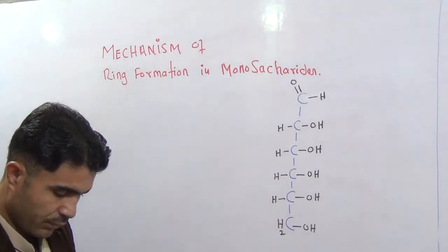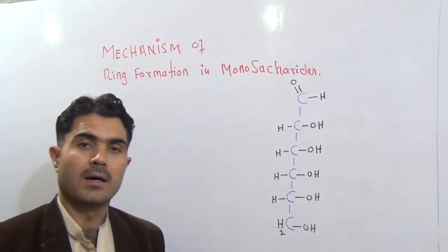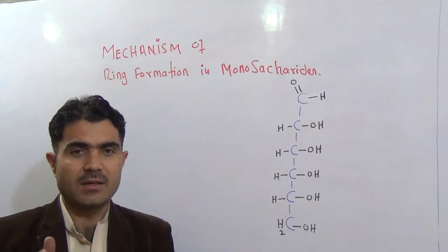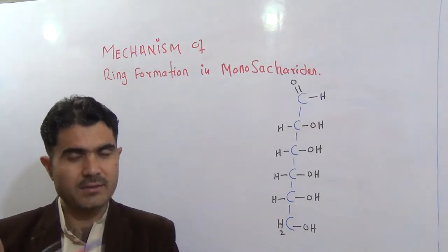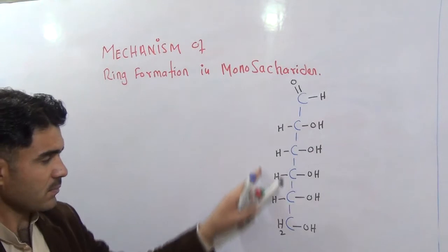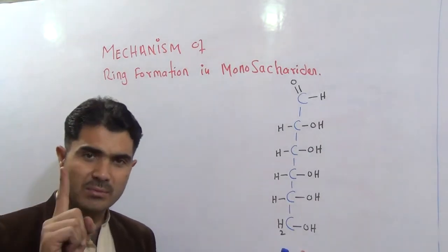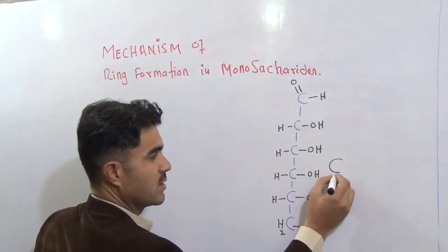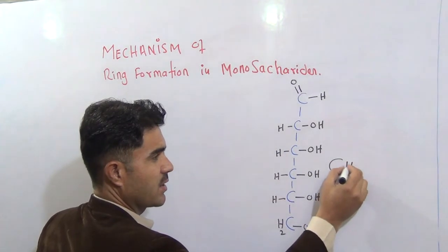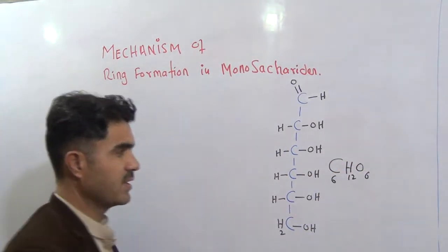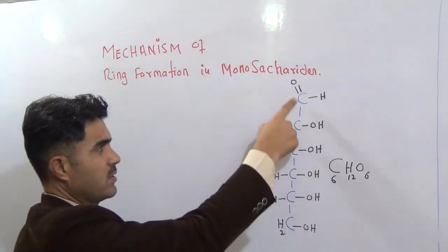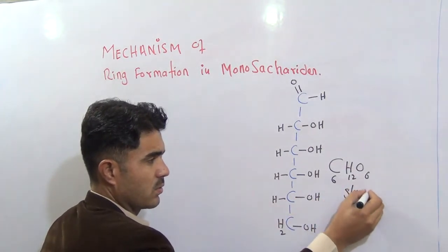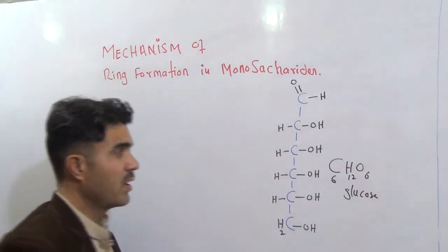We know very well that a monosaccharide, a carbohydrate, contains either a functional group aldehyde or ketone. Here I have mentioned one monosaccharide with the structural formula C6H12O6. This is the structural formula and this is the molecular formula. You can call it glucose — so this is glucose.